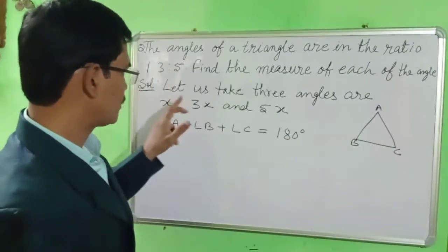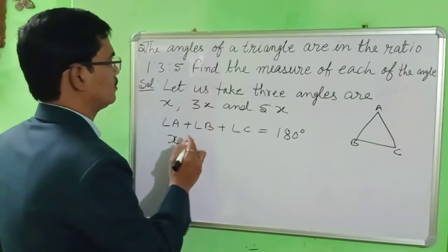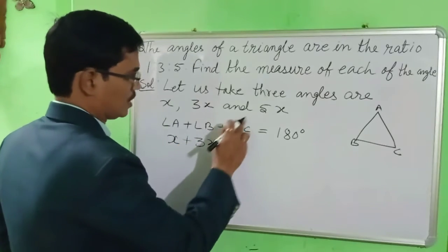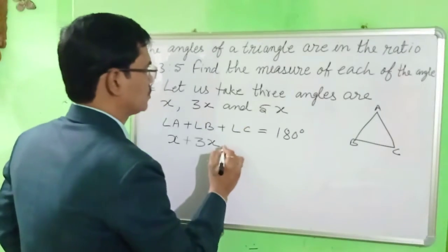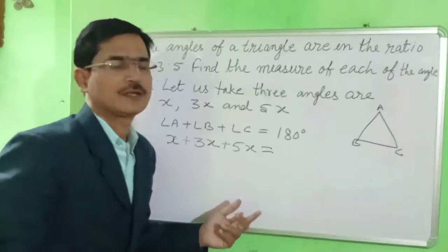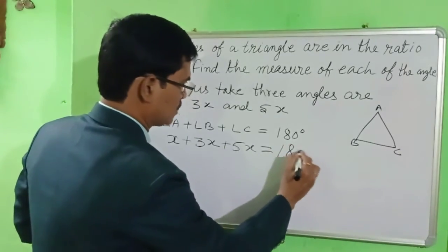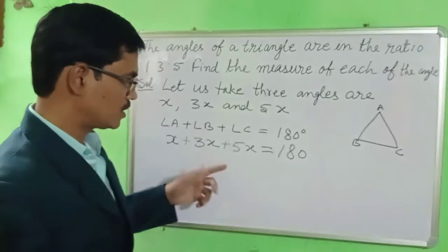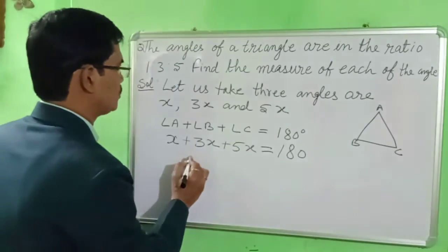So we write here: the first angle is X, the second one is 3X, and the third one is 5X, and this is equal to 180. Now we add: 5 plus 3 is 8, plus 1 is 9, so we get 9X.